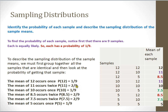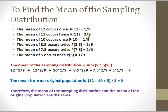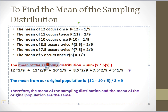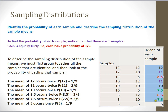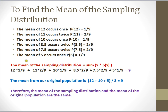Now I want to calculate the mean of my sampling distribution. The sampling distribution consists of all the different samples I could possibly get and their possible averages. To find the mean, I multiply each value of x by the probability of getting that value, then add all of those products together.